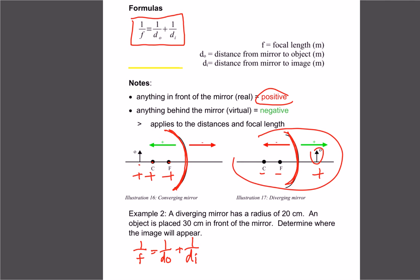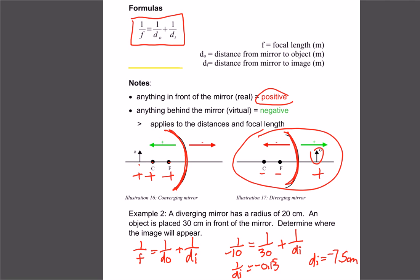Let's do an example: a diverging mirror with a radius of 20. If the radius is 20, the focus is 10, so in our formula we write it as negative 10 because it's on the back side of the mirror. The object is 30 centimeters in front, so that's positive 30. We want to find the image distance di. Using fractions: negative 1/10 minus 1/30 equals 1/di. That gives 1/di ≈ −0.1333, so di = −7.5 cm. It's negative because the image is behind the mirror, which matches our diagram.